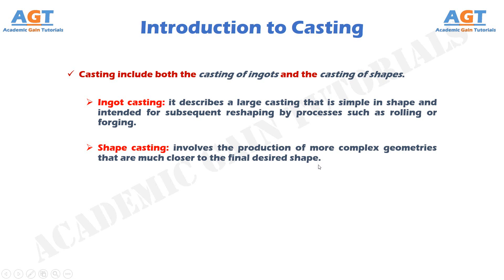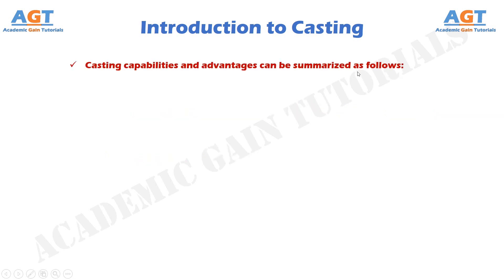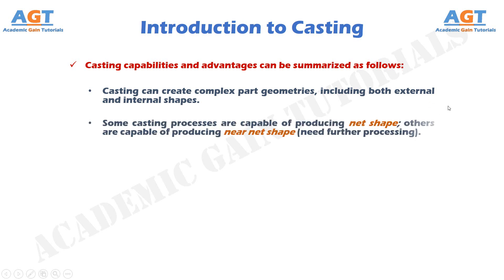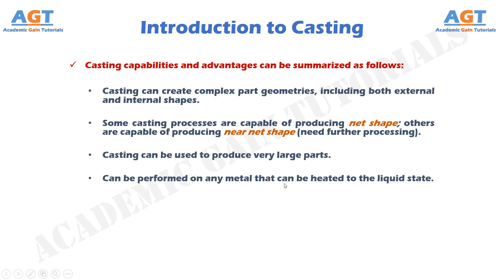Casting capabilities and advantages can be summarized as follows. Casting can create complex part geometries, including both external and internal shapes. Some casting processes are capable of producing net shape; others are capable of producing near net shape, which need further processing. Casting can be used to produce very large parts, can be performed on any metal that can be heated to the liquid state, and some casting processes are suited to mass production.